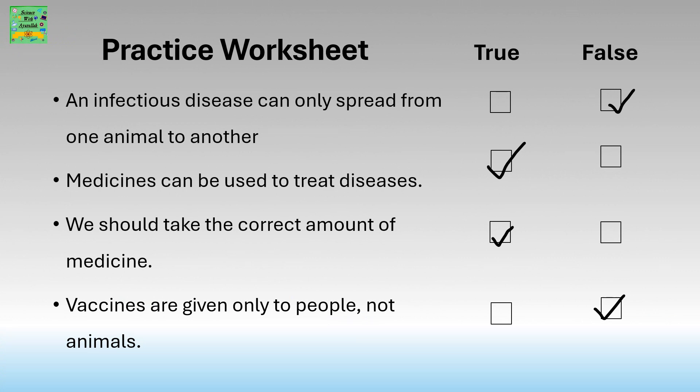Practice Worksheet. An infectious disease can only spread from one animal to another — this is false, because an infectious disease can also spread from one animal to a human. Medicines can be used to treat diseases — true. We should take the correct amount of medicine — true. Vaccines are given only to people, not animals — false, because vaccines are available for people as well as animals.